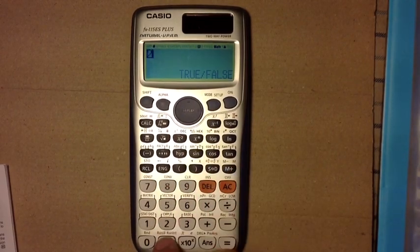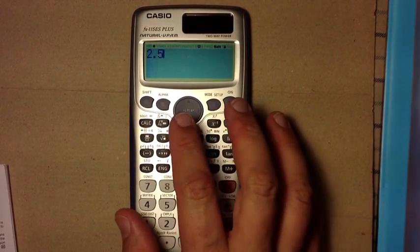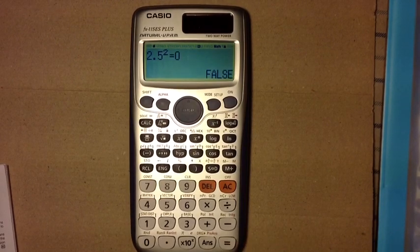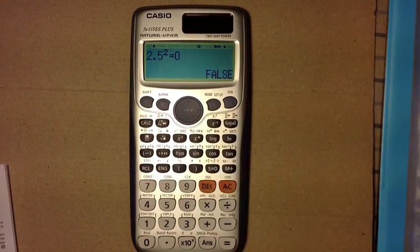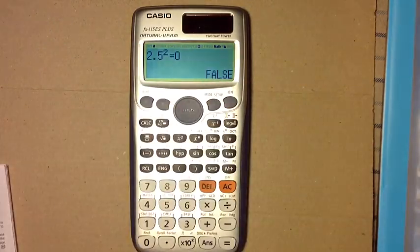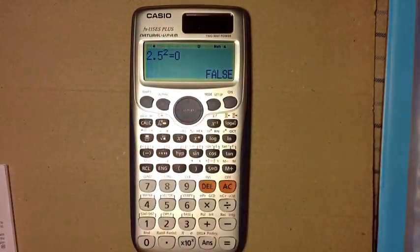Now, I just did something here. If you try to do a straight calculation in this mode, say, 2 and a half squared with no comparison operations, and just press this equals key down here, I'm going to get a false. Because if you enter an expression without the equal sign or inequality, it's going to compare it to 0.